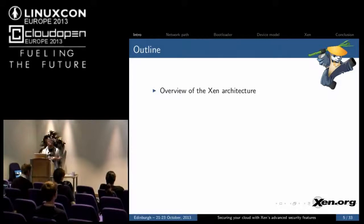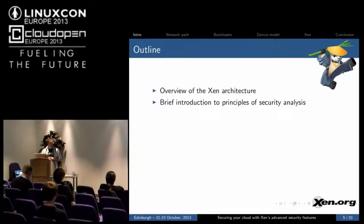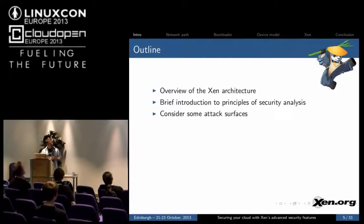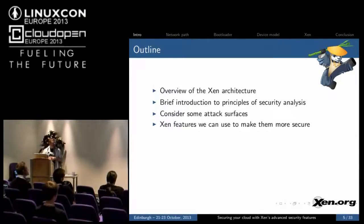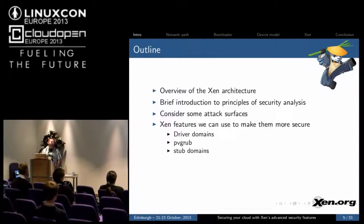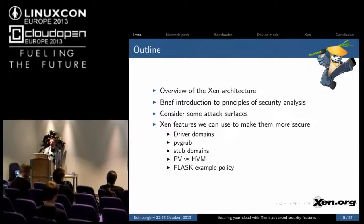In order to accomplish those goals we're going to cover these things. We're going to give a brief overview of the Xen architecture, a brief introduction of the principles of security analysis, and then consider some attack surfaces and some Xen features that we can use to make those services more secure. Some of these features we're going to talk about will include driver domains, pvgrub, stub domains, we're going to compare PV versus HVM, and the Flask example policy.